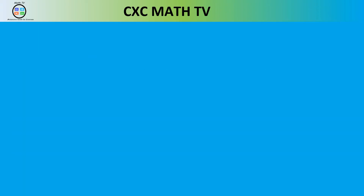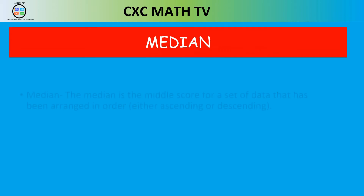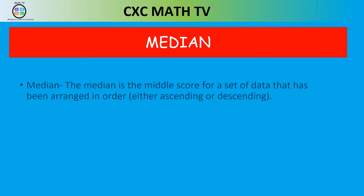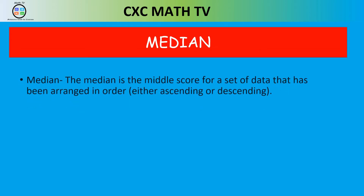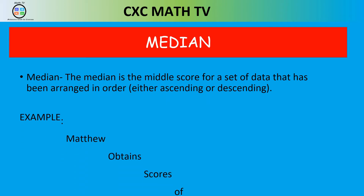The next measure is the median. The median is the middle score of a data set when it is arranged in either ascending or descending order. Let's look at the same example with Matthew's scores.